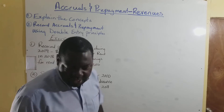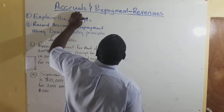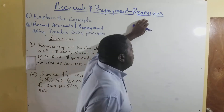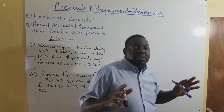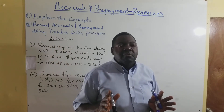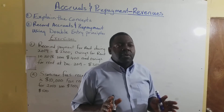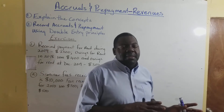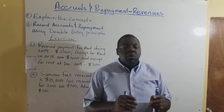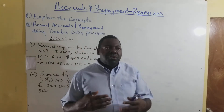Now, understand that accruals and prepayment in relation to revenues — revenue is a concept that is treated in accounting as a liability. Expenses are treated like assets while revenues are treated like liabilities in your double entry system.